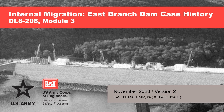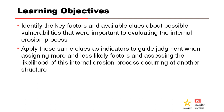This presentation is the East Branch Dam case history, where internal migration resulted in a dam safety incident and eventually led to the installation of a cutoff wall to reduce the risk. The objective is to identify the key factors and clues about possible vulnerabilities important to evaluating internal migration. You can then apply these same clues as indicators to guide judgment when assigning more and less likely factors and assessing the likelihood of internal migration at other structures.